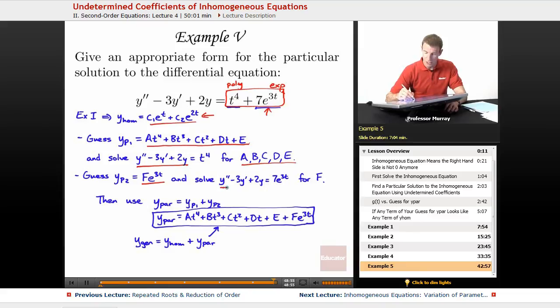You just find its first and second derivatives, plug it in, and solve for F. And then, those two particular solutions that you found, one for the polynomial part, one for the exponential part, you'd add them together and get your combined particular solution. And then, you would add that on to your homogeneous solution to get your general solution. So, that's the end of our lecture on undetermined coefficients.